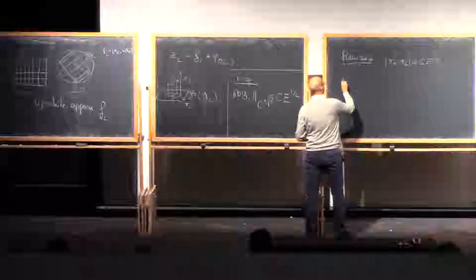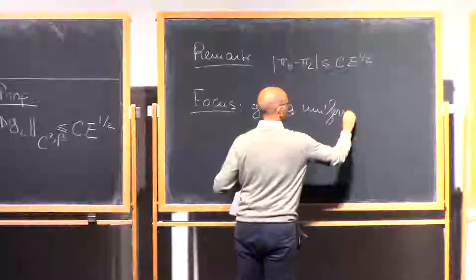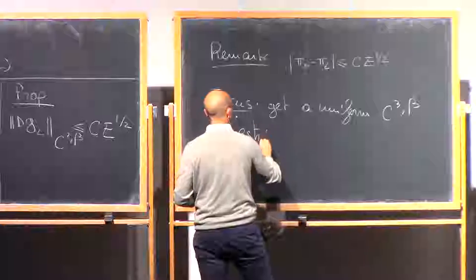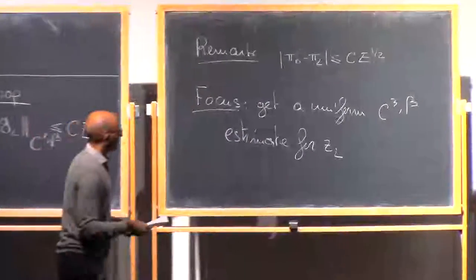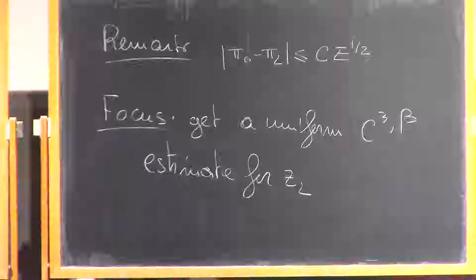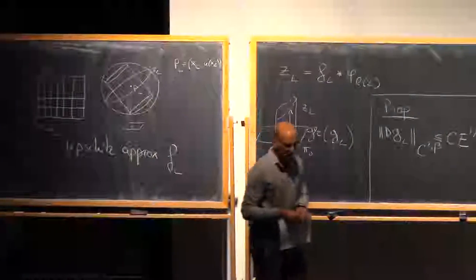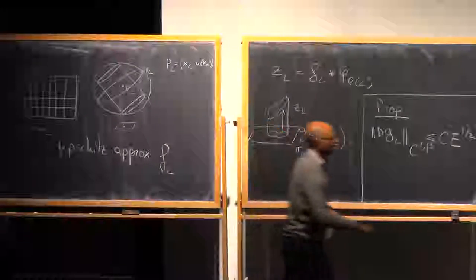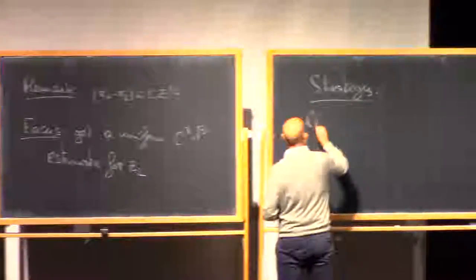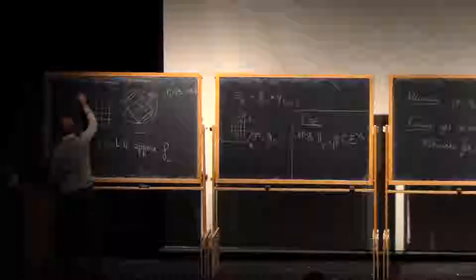Therefore from now on the focus is to get a uniform C3 beta estimate for this piece ZL. The basic strategy is the following. I fix a cube L and I start looking — at each level, this is a cube L at a certain fineness of the grid. Let's say L of L is the size of the initial cube, which is sigma, or maybe 2 sigma. So this is going to be 2 to the minus K times 2 sigma.